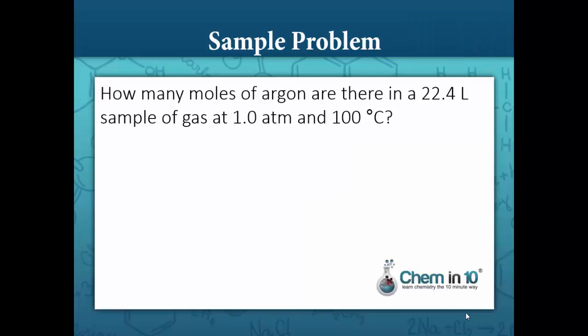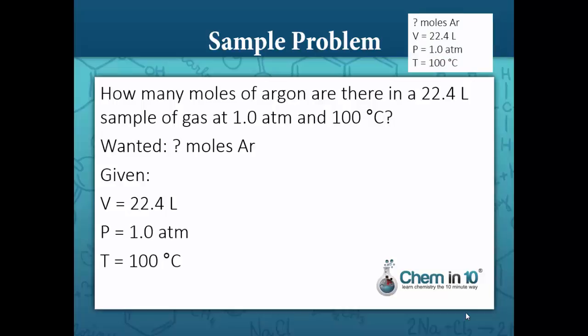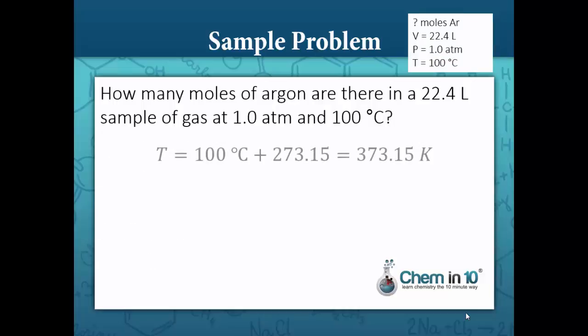How many moles of argon are there in a 22.4 liter sample of gas at 1.0 atmosphere and 100 degrees Celsius? So we have a different temperature here. We still want to know the number of moles. We're given a volume of 22.4 liters, a pressure of 1.0 atm, and a temperature of 100 degrees Celsius. Again, we need to convert our temperature to Kelvin, so 100 degrees Celsius is equal to 373.15 Kelvin.